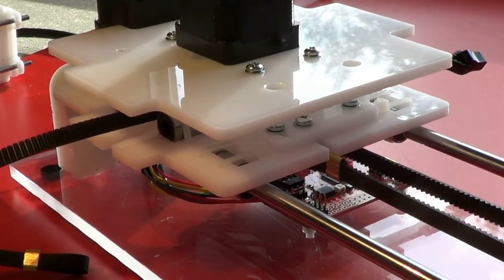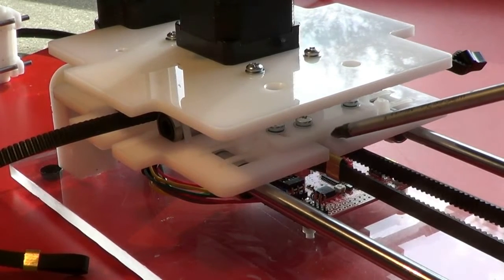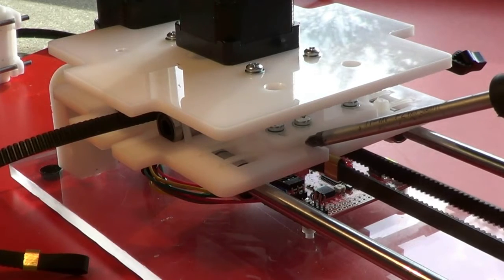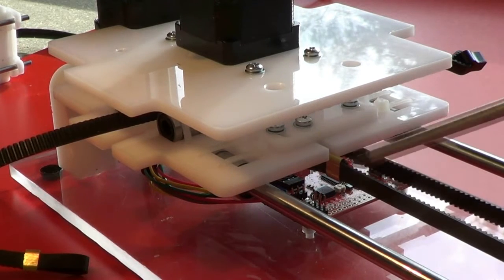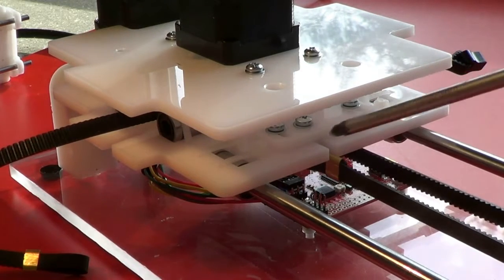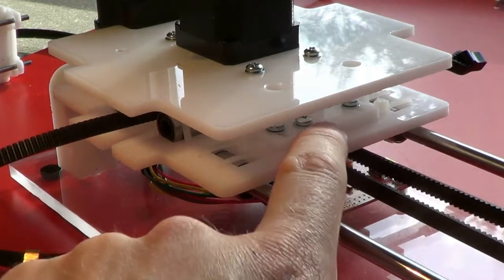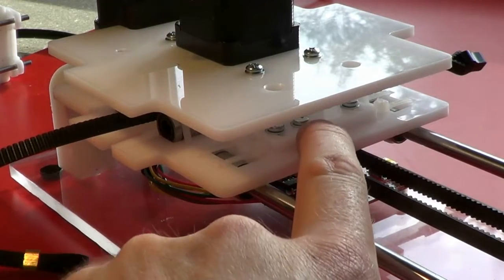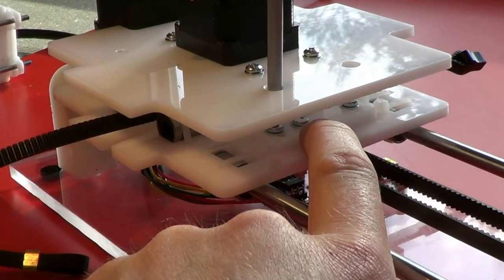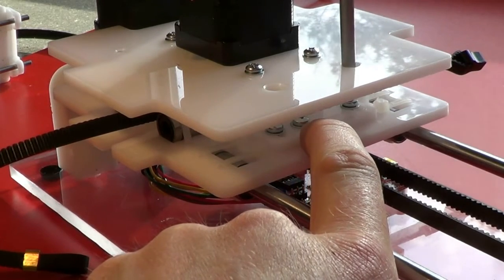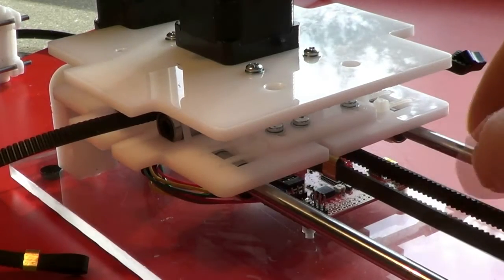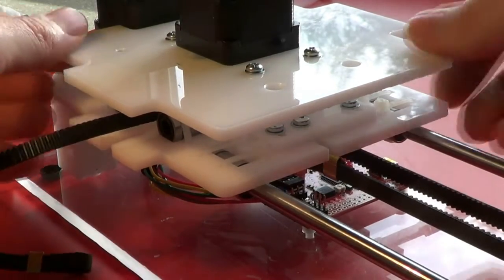In order to tension the X belt, the tensioner plate needs to be pushed to the left. That, in turn, pulls on the anchor post, making the belt go tight. So, if you press on the tensioner plate with your finger and then use the number one posi-drive screwdriver to tighten both of the anchor screws, that belt tightens up nicely.